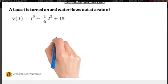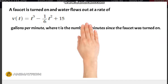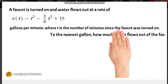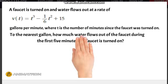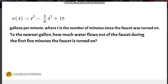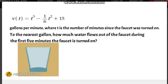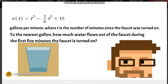So here is our problem. A faucet is turned on and water flows out at a rate of V(T) = T³ - 16T² + 15 gallons per minute, where T is the number of minutes since the faucet was turned on. To the nearest gallon, how much water flows out of the faucet during the first 5 minutes?